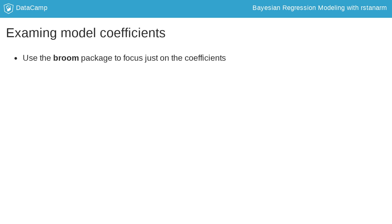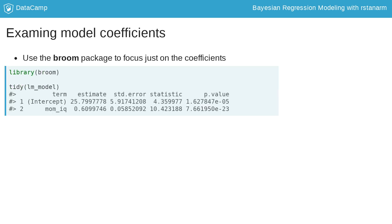If we only want information about the coefficients, we can use the tidy function from the broom package. This shows the estimate, standard error, test statistic, and p-value for each coefficient in the model. Using a p-value cutoff of 0.05, we see that the mom's IQ is a significant predictor of the child's score on the IQ test.